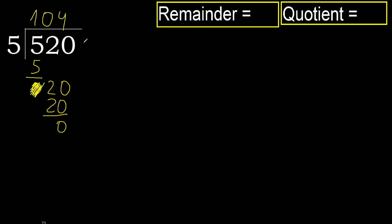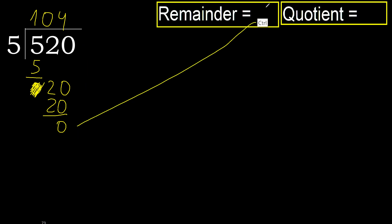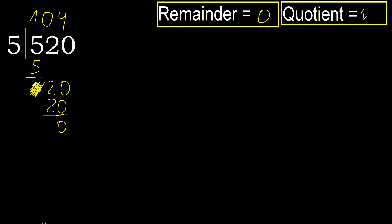Next — there is no more number, therefore we finish. 520 divided by 5 is 104.